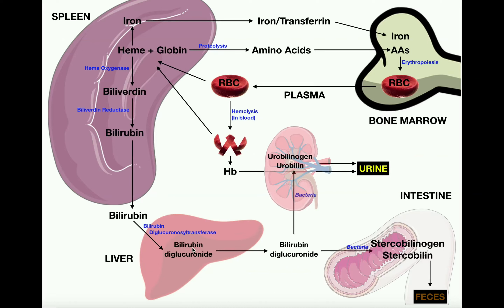That bilirubin diglucuronide is going to be transported to one of two places — either the intestines or the kidneys. If the bilirubin diglucuronide ends up in the intestines, there's going to be some intestinal bacteria that will convert it into two products: stercobilinogen and stercobilin. Stercobilin is actually what gives feces its brown color — it's a brown pigment. This is done not by human enzymes but by bacterial enzymes in the gut, and these stercobilinogens and stercobilins are excreted in the feces.